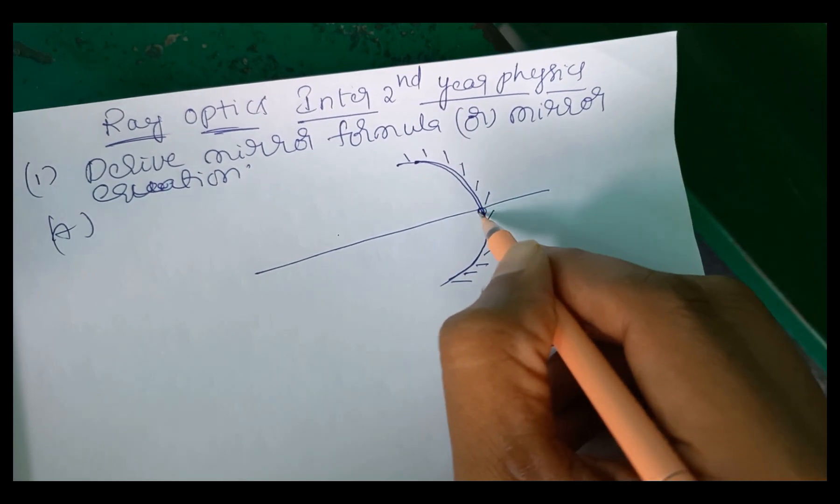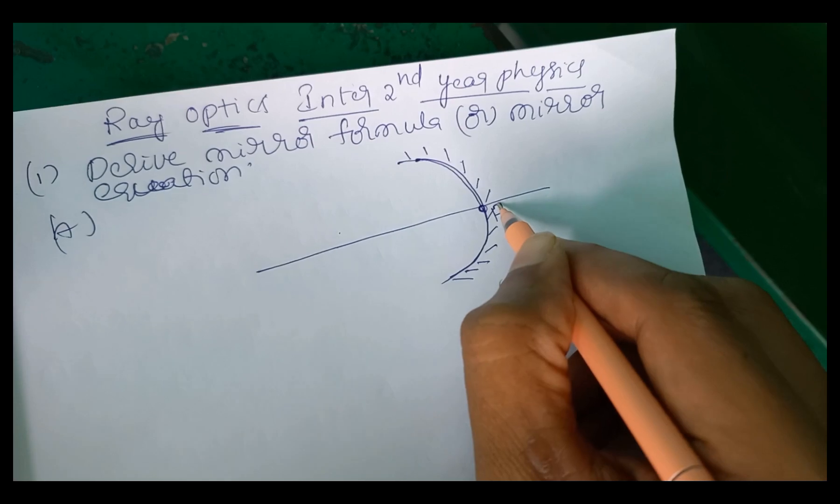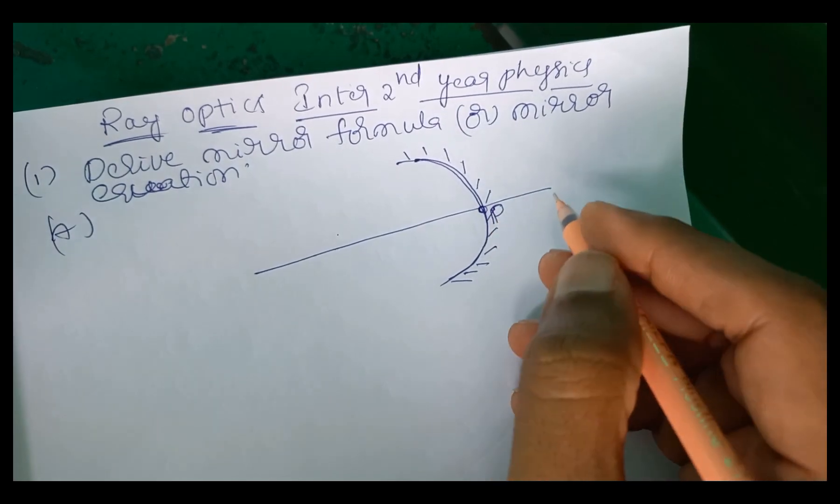So this line is called principal axis and this point is called pole. So midpoint of the mirror, we want to pull in check them.